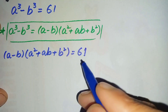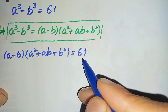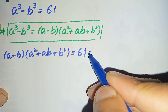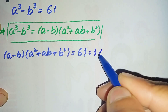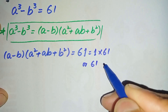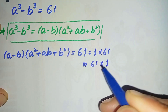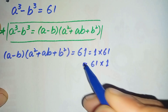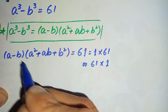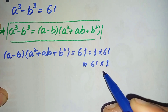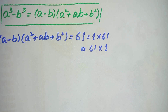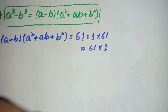Now we will factorize 61 into the product of its prime factors. We can write 61 as 1 times 61 or 61 times 1. We cannot factorize it further because 61 is a prime number. So we will compare the two expressions with this product of two numbers.